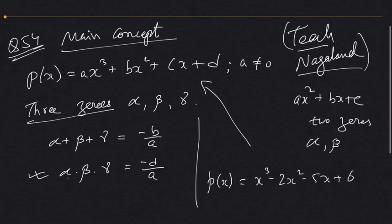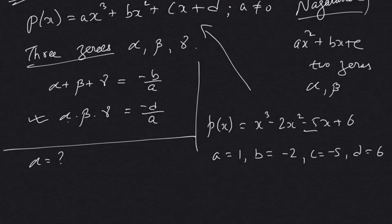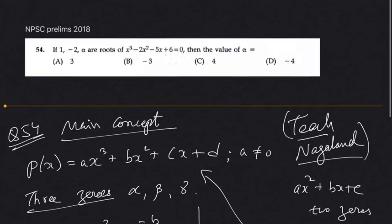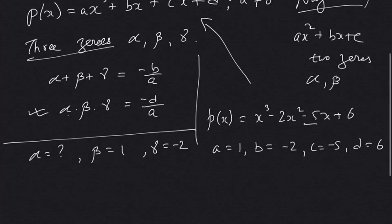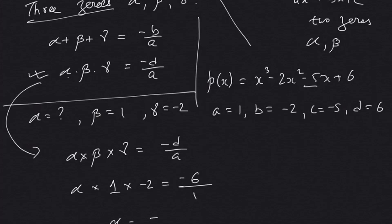Comparing coefficients: a = 1, b = −2, c = −5, d = 6. Two zeros are given — we assume beta = 2 and gamma = −1 (or −2). Using the product formula: alpha × beta × gamma = −d/a. So alpha × 2 × (−2) = −6/1, giving alpha × (−4) = −6, so alpha = −6 / −2 = 3. It's a very simple question for any student who knows the concept.